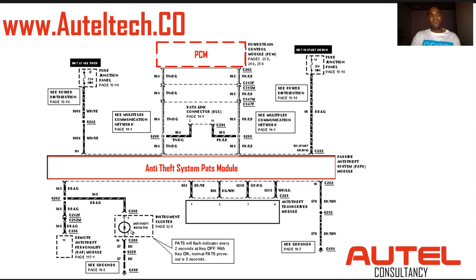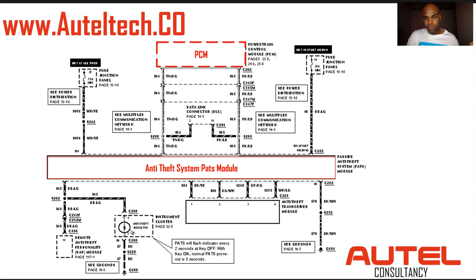The way I'd advise troubleshooting this scenario: after checking communications between modules, do a full auto scan of all modules. If you get a U1147 error code, your PATS module is faulty and needs to be replaced. After installing and programming a new PATS module, configuring it to the vehicle, and erasing all codes — if the U1147 still persists, that means your PCM is faulty and needs to be replaced.